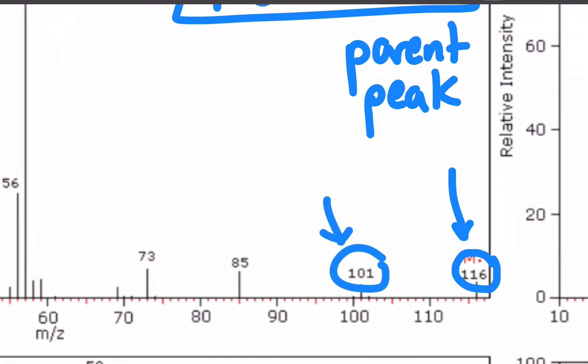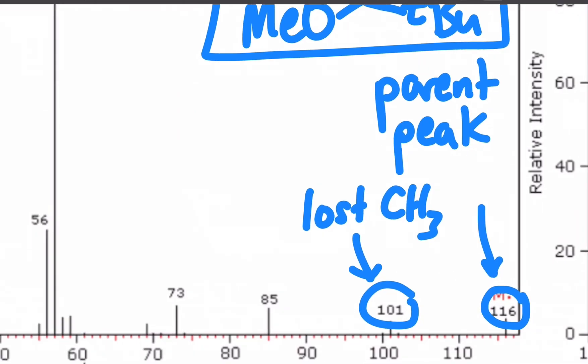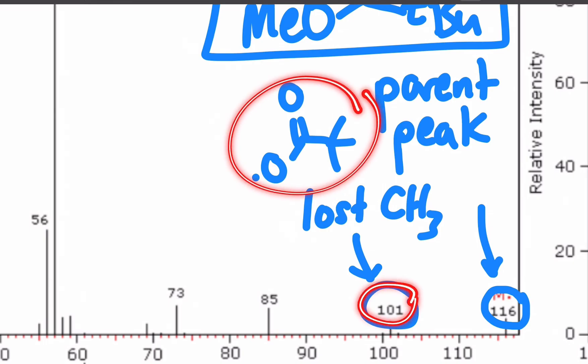101 is exactly 15 less than 116. So the molecule lost a CH3 group, which means maybe we broke the methyl off of that bond or perhaps one of the methyls in the t-butyl. And then you're left with the fragment molecule. That would weigh, if I added that up, that should weigh 101.